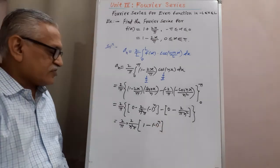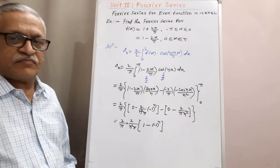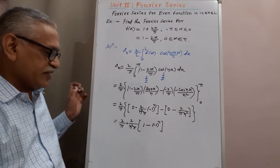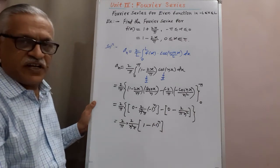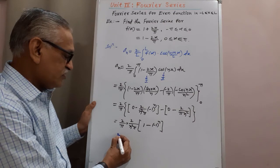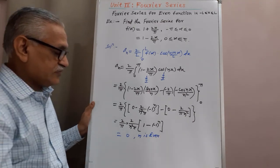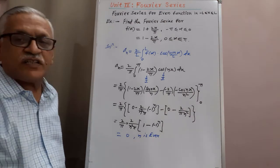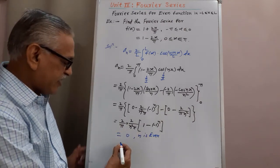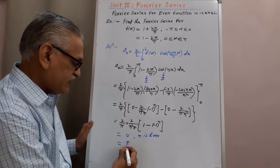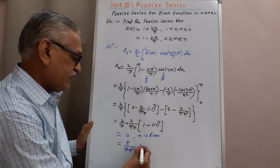Since [1 − (−1)ⁿ] gives two different values depending on whether n is even or odd: when n is even, (−1)ⁿ = 1, so 1 − 1 = 0, giving aₙ = 0. When n is odd, (−1)ⁿ = −1, so 1 − (−1) = 2, and multiplying gives 4, then 8 overall: aₙ = 8/(n²π²) if n is odd.